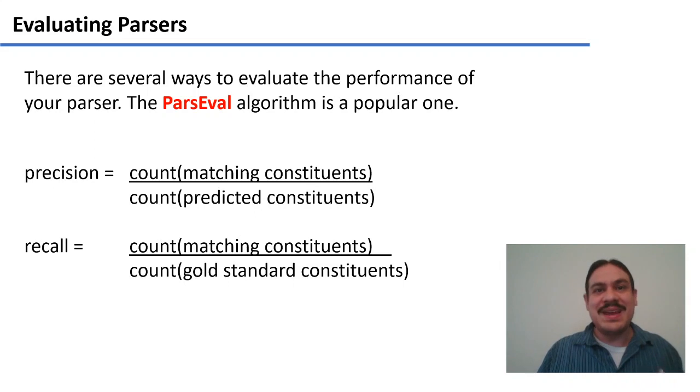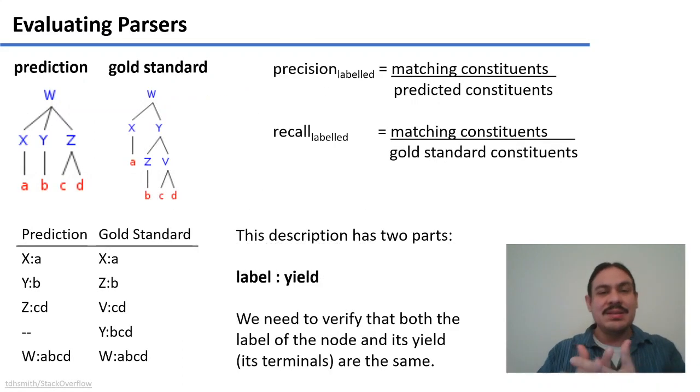How do we know it's getting this right? How can we evaluate a parser and the set of rules that we made? There's several ways to do it, as with all of our methods, but the one that's mentioned in the textbook is a very popular one called ParseEval. It has the two measurements that we've studied before: precision and recall. And precision is the number of constituents that are the same between our prediction with the computer and the gold standard, so the one that we know is correct.